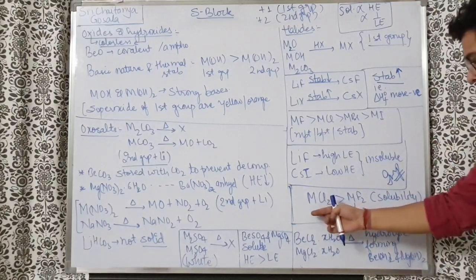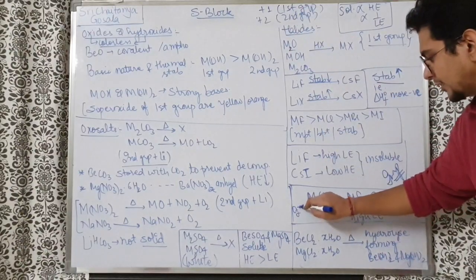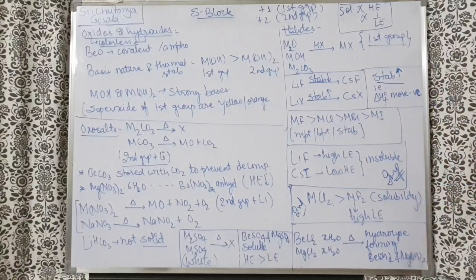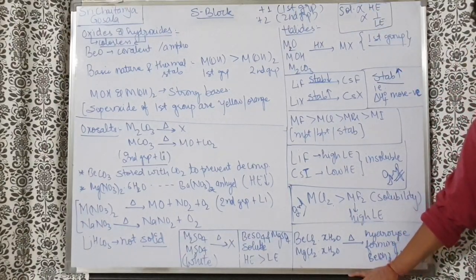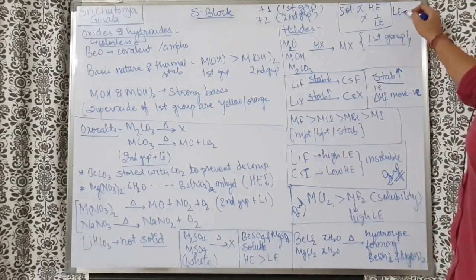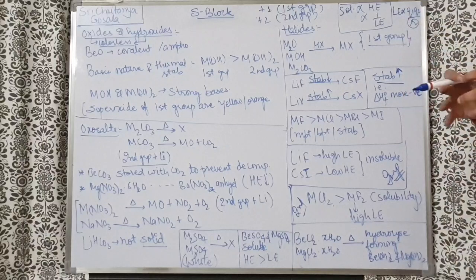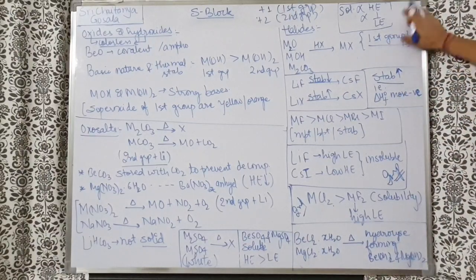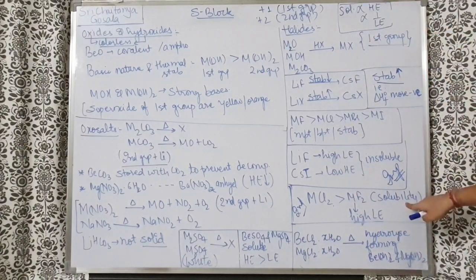For Group 2, MCl2 is more soluble than MF2 in aqueous medium because fluorides have high lattice enthalpy. Small ions have high lattice enthalpy due to the electrostatic relationship: lattice enthalpy ∝ Q1·Q2/R. So fluoride, being the smallest anion, has high lattice enthalpy, giving it low solubility. Therefore, chlorides of Group 2 are more soluble than fluorides.